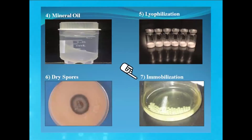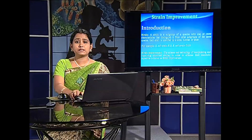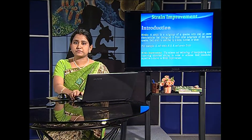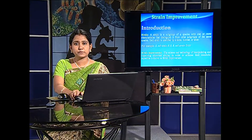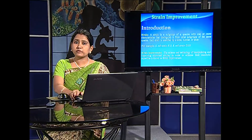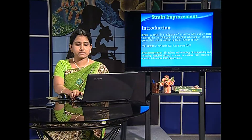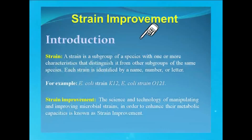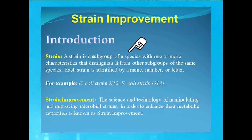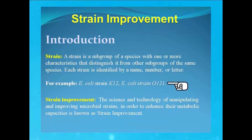We move on to the second point, which is strain improvement. A strain is a subgroup of a species with one or more characteristics that distinguish it from other subgroups of the same species. Each strain is identified by a name, number, or letter — for example, E. coli strain K-12 or E. coli strain O-121.